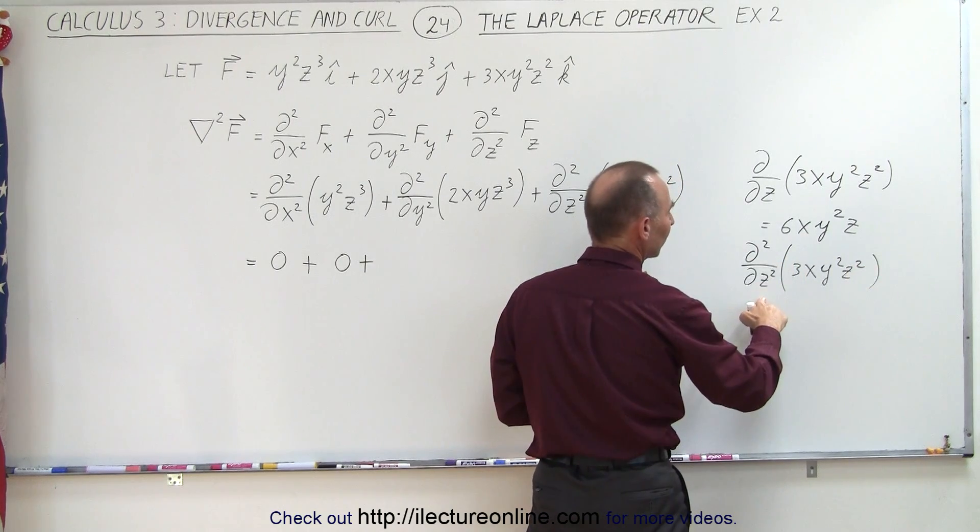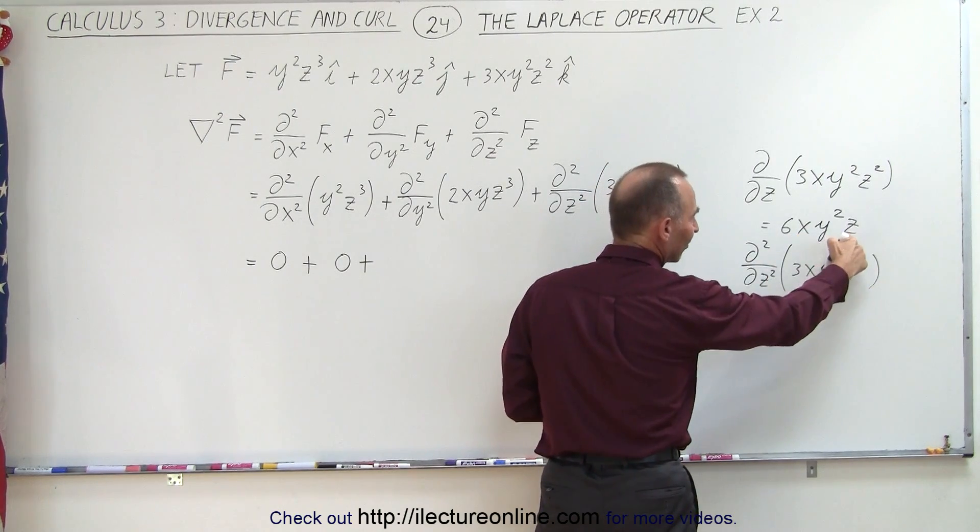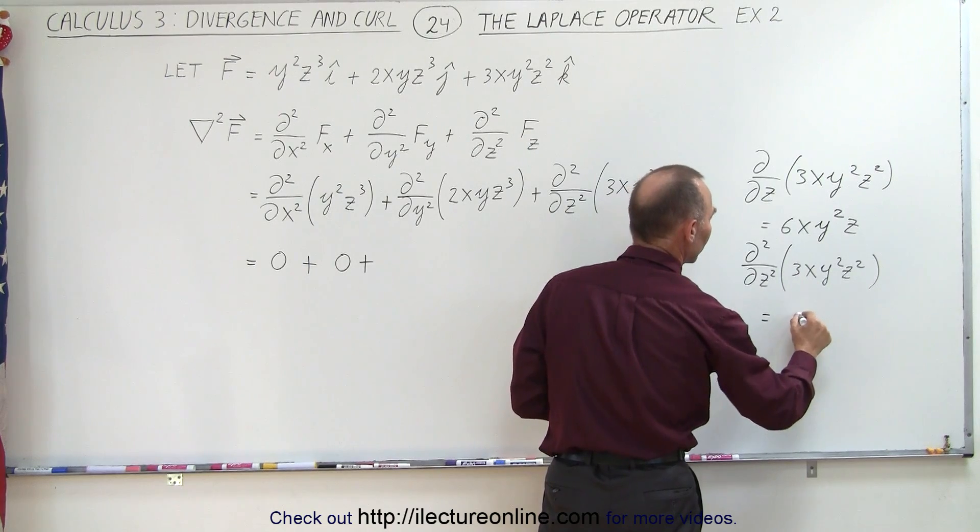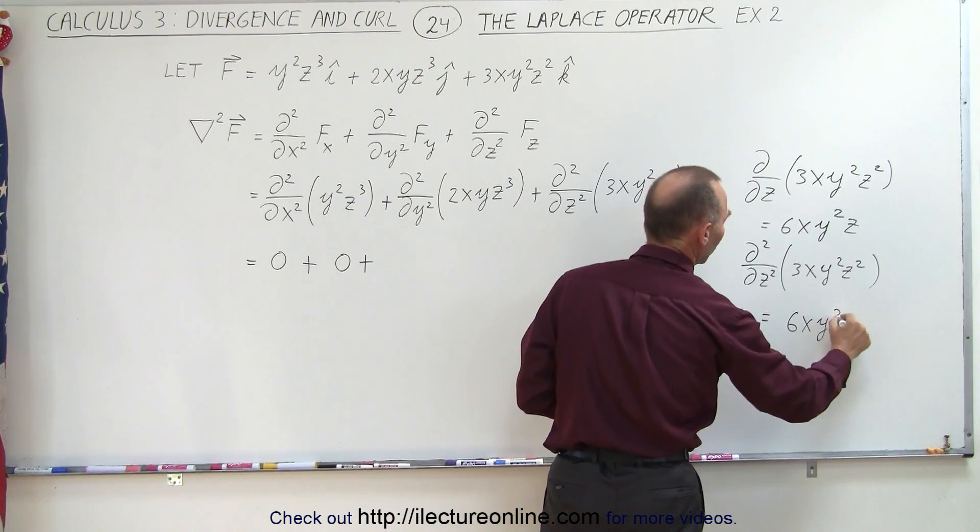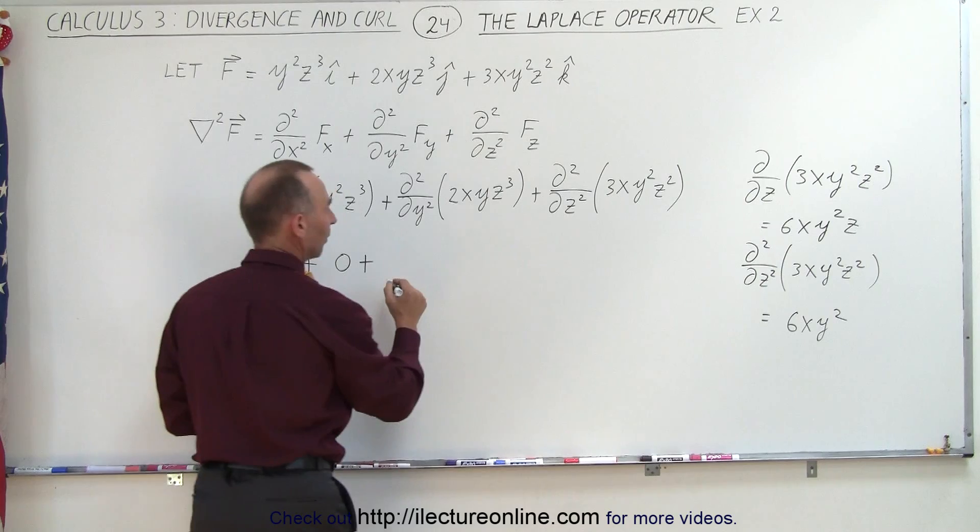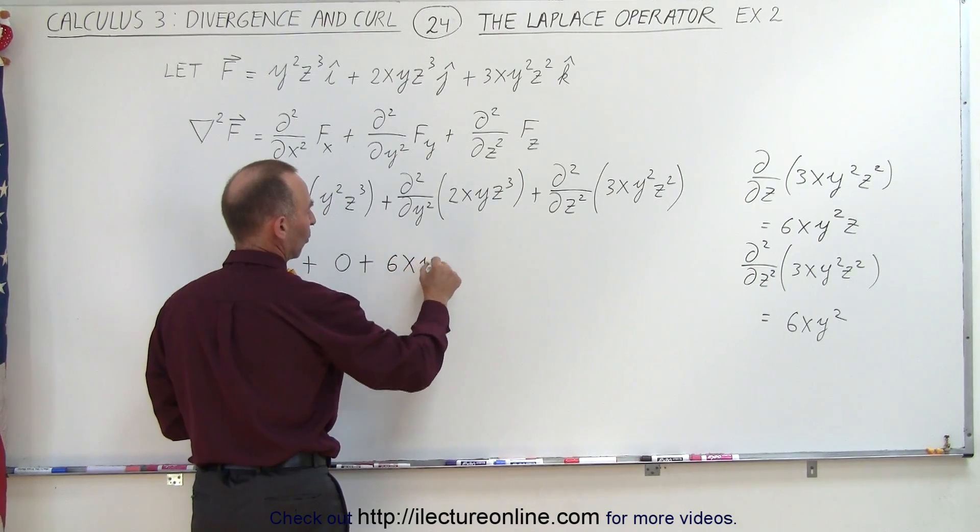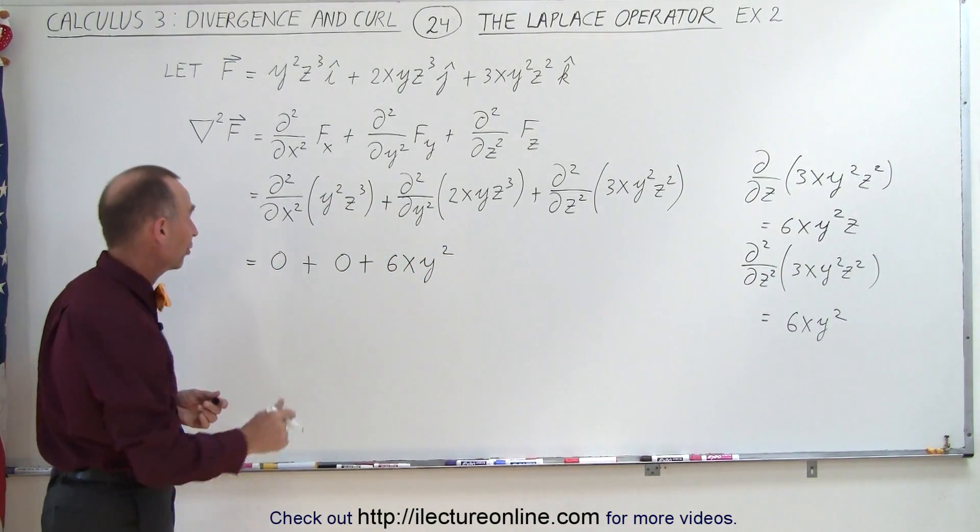Now we take the second derivative, which means the first derivative of this, since it has a z in there, this becomes equal to 6xy², which goes in here, plus 6xy², which is the only surviving term.